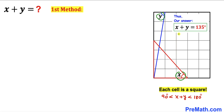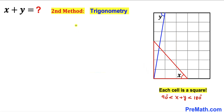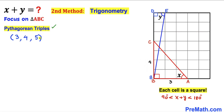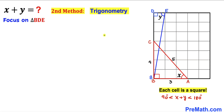Now let me show you the second method, where we use trigonometry. Let's focus on right triangle ABC, where side AB is 3 units and side BC is 4 units. Recalling the Pythagorean triplet 3-4-5, the longest leg is 5 units.